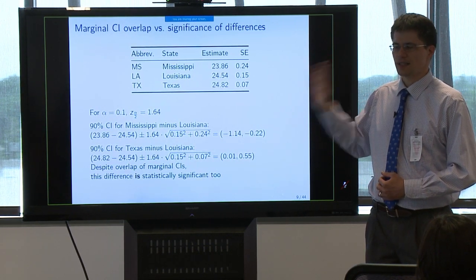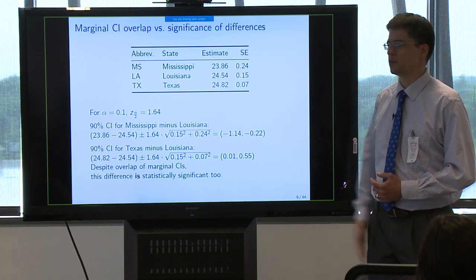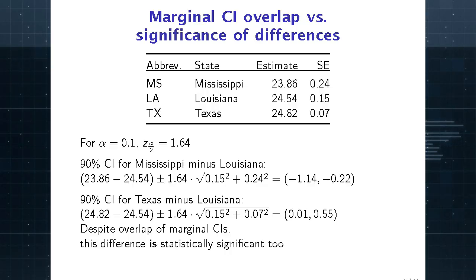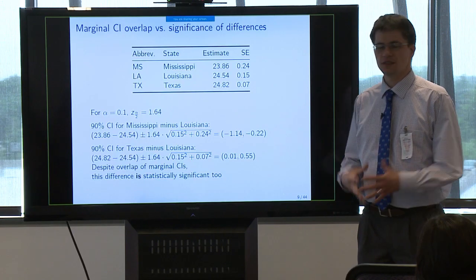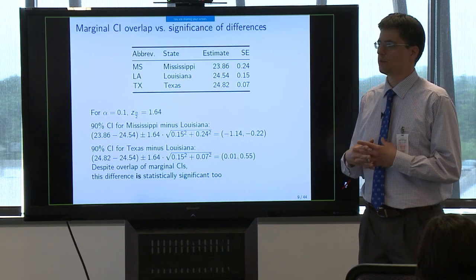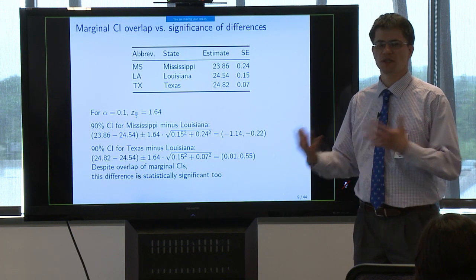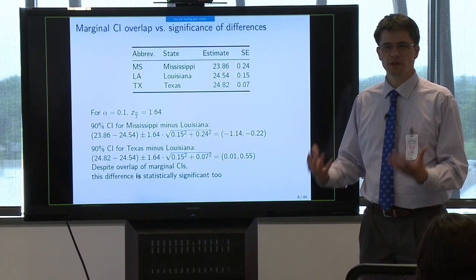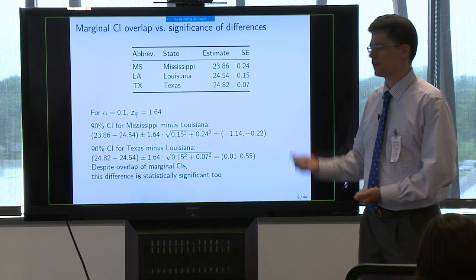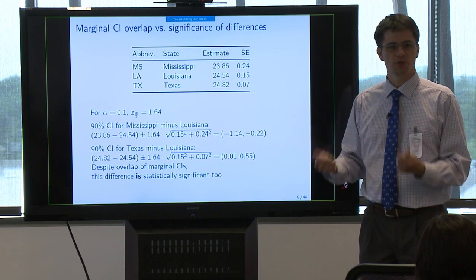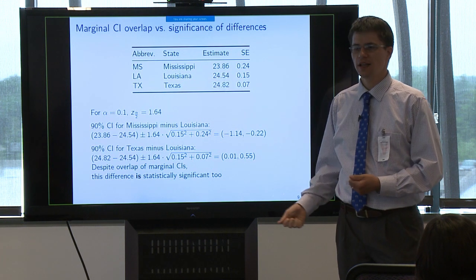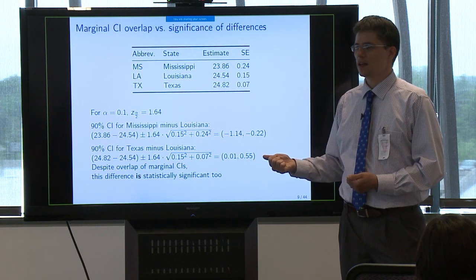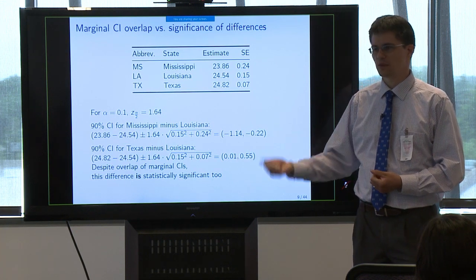Because of the way ACS sampling is done, we can assume estimates are independent from state to state. We take the difference between Mississippi's 23.86 estimate and Louisiana's 24.54, then do plus or minus the z-score — 1.64 for a 90% confidence interval — times the standard error for the difference, which is the square root of the sum of squared standard errors. The confidence interval for Mississippi minus Louisiana turns out to be between minus 1.1 and minus 0.2. It doesn't include zero, so we can say we measured this correctly: Mississippi's estimate is genuinely lower than Louisiana's.